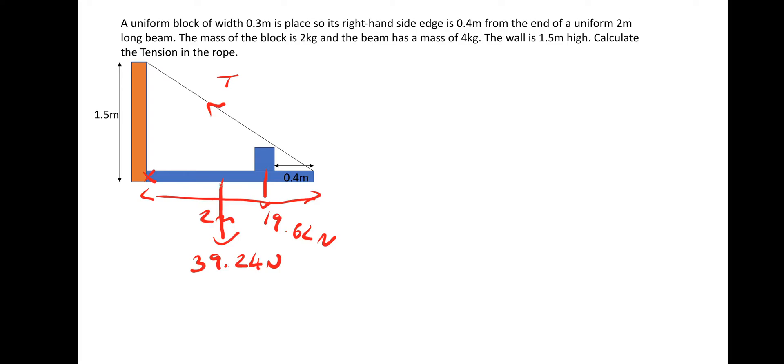So the distance to the center of the beam is 1 meter. The distance to the block, now it's 0.4 meters from the end. And then we've got the width of the block to take it out. It's a uniform block so that means that its weight would act at its center. So we need to do the 0.4 plus 0.15. So that gives a distance from the end of the beam of 0.55 meters. So we need to do 2 meters subtract that distance. And that gives us 1.45 meters to the center of the block.